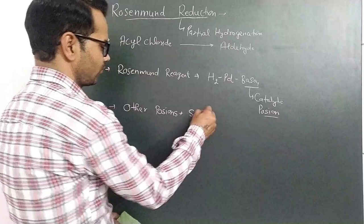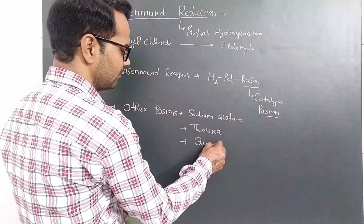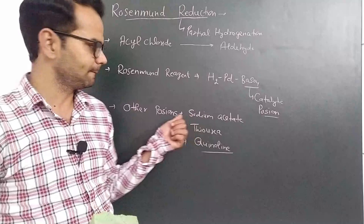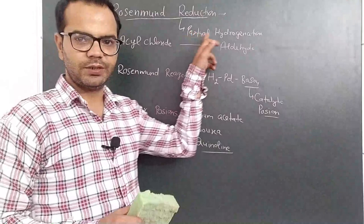In Rosenmund reagent, other catalytic poisons are also used: sodium acetate, thiourea, and quinoline. All these control the reactivity of hydrogen, making it available for only partial hydrogenation. Otherwise, the major product will be the alcohol.